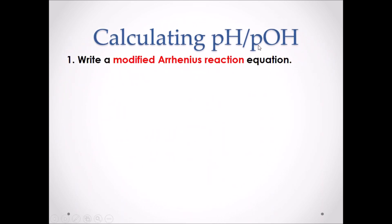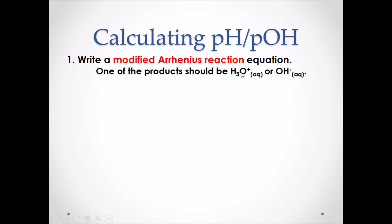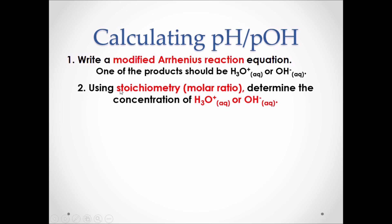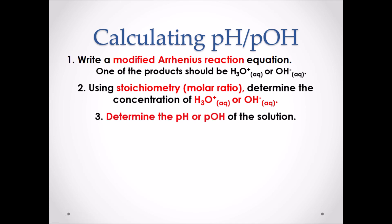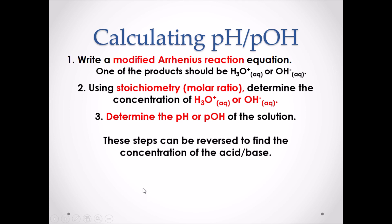Calculating pH and pOH. Step 1: write a modified Arrhenius reaction equation — one of the products should be H₃O⁺ or OH⁻. Step 2: use stoichiometry, the molar ratio in the chemical equation, to determine the concentration of H₃O⁺ or OH⁻ in the solution. Then finally, determine the pH or pOH using the pH or pOH formula. These steps can also be done in reverse to find the initial concentration of an acid or a base.